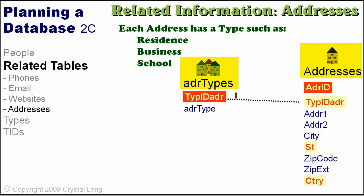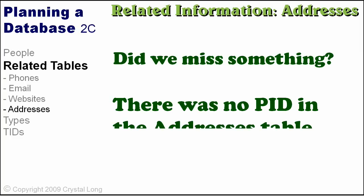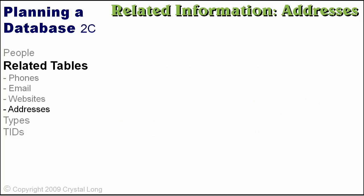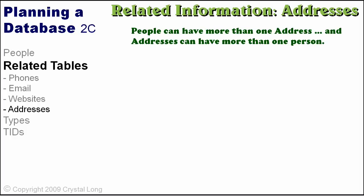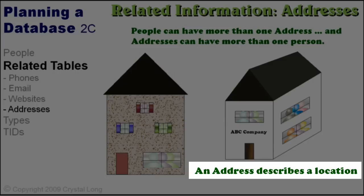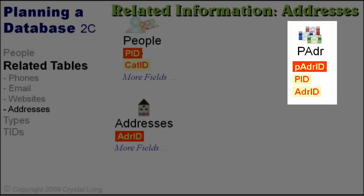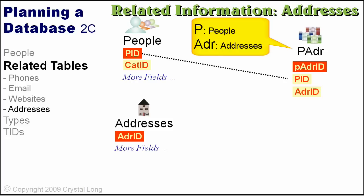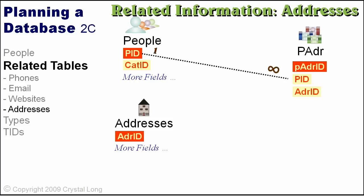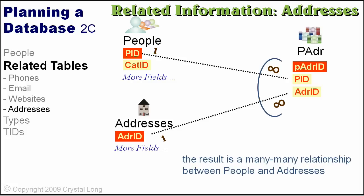There is a one-to-many relationship between address types and addresses. Did we miss something? There is no PID in the addresses table — how are we going to relate an address to a person? An address describes a location. People can have more than one address, and addresses can have more than one person. A many-to-many relationship exists between people and addresses. We need a cross-reference table, or junction table, to set this relationship properly. The junction table will be called PADR. There is a one-to-many relationship between people and PADR, and a one-to-many relationship between addresses and PADR, resulting in a many-to-many relationship between people and addresses.